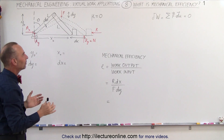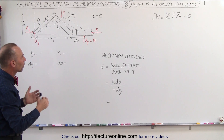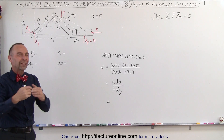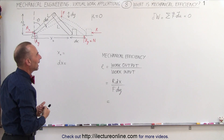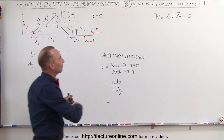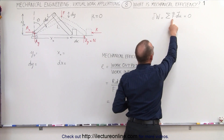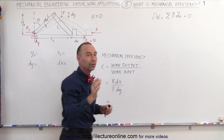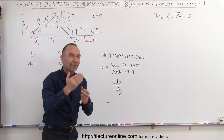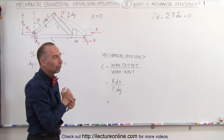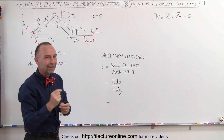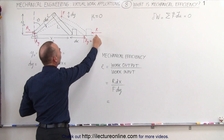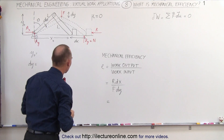We're going to calculate the amount of work done through an infinitesimally small motion — that's called virtual work — and we have that defined as being the sum of all the forces times all the displacements. Remember that it's the magnitude of force times the magnitude of displacement times the cosine of the angle between the direction of the force and the direction of the displacement.